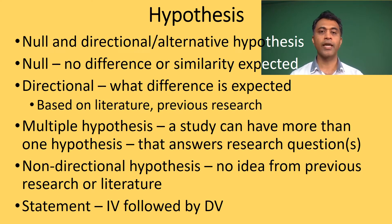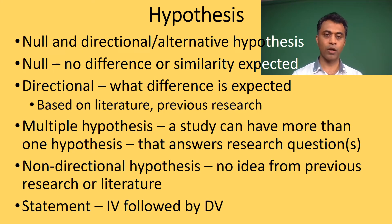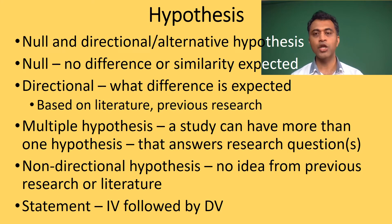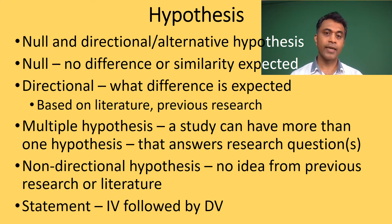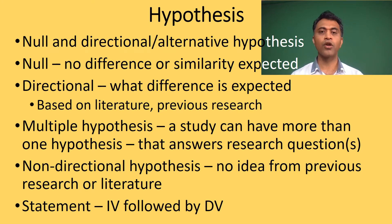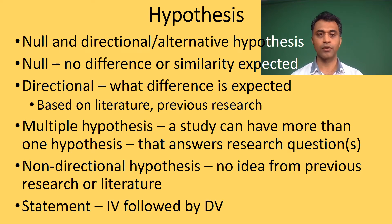Sometimes we give a non-directional hypothesis when we do not know how the results will swing — whether it will be towards group A or group B. A non-directional hypothesis is used when the direction cannot be predicted from previous literature. For example: there is a difference between group A and group B in the presence of disease, but we do not know which group will have higher disease.